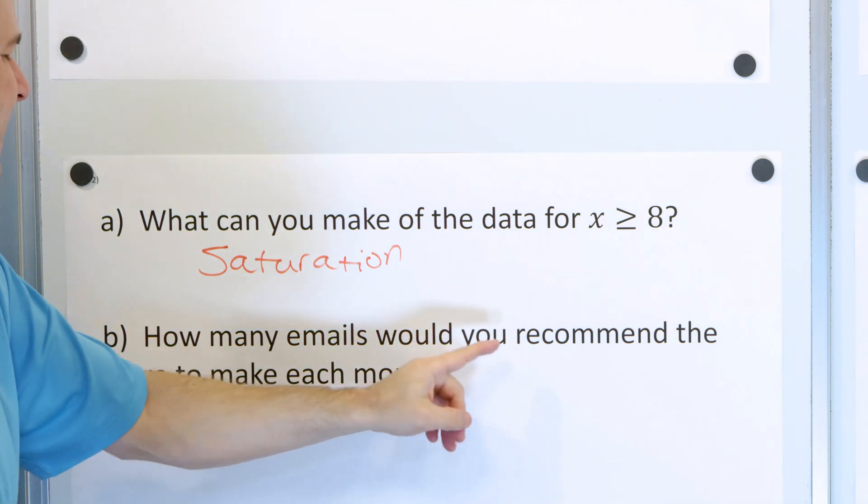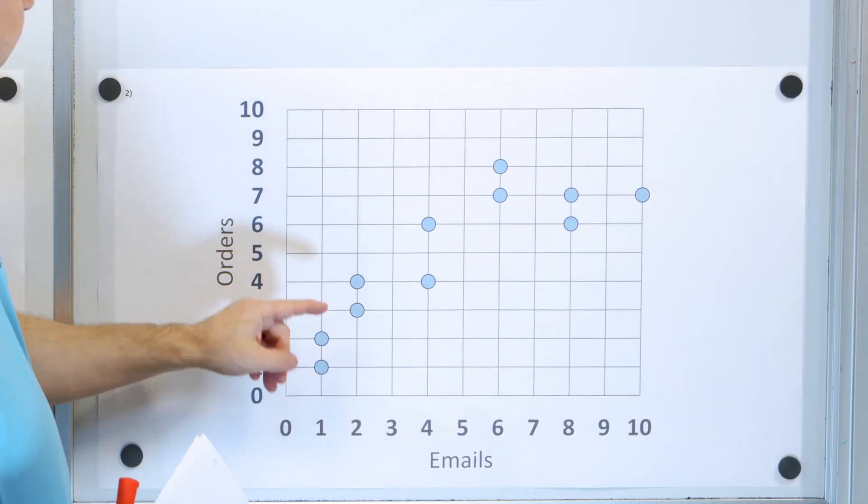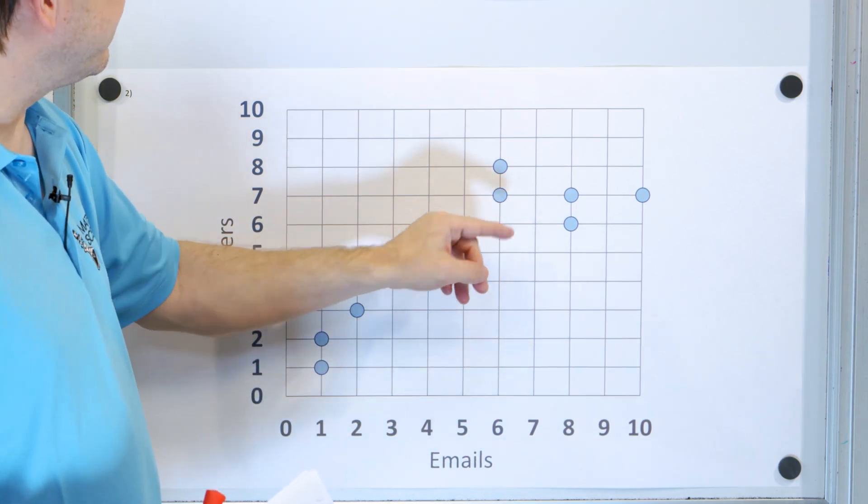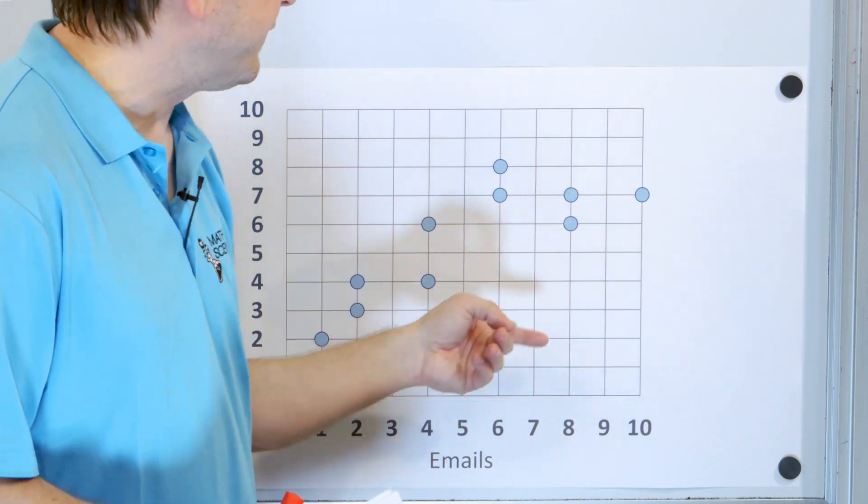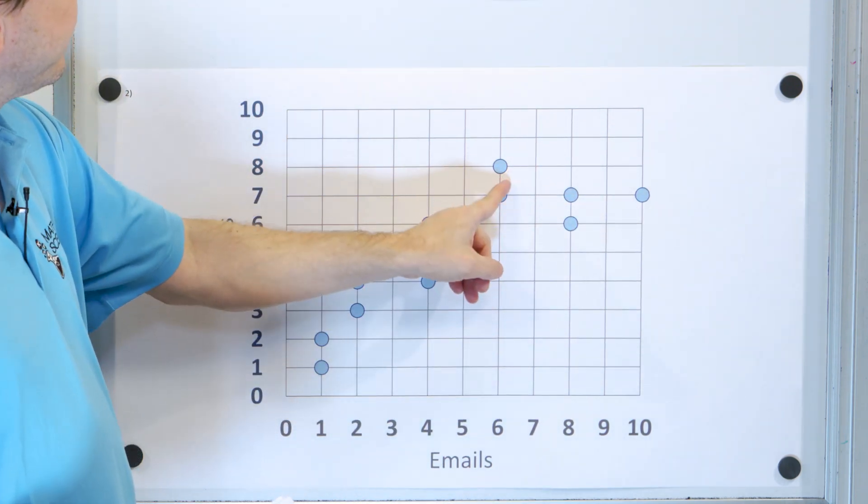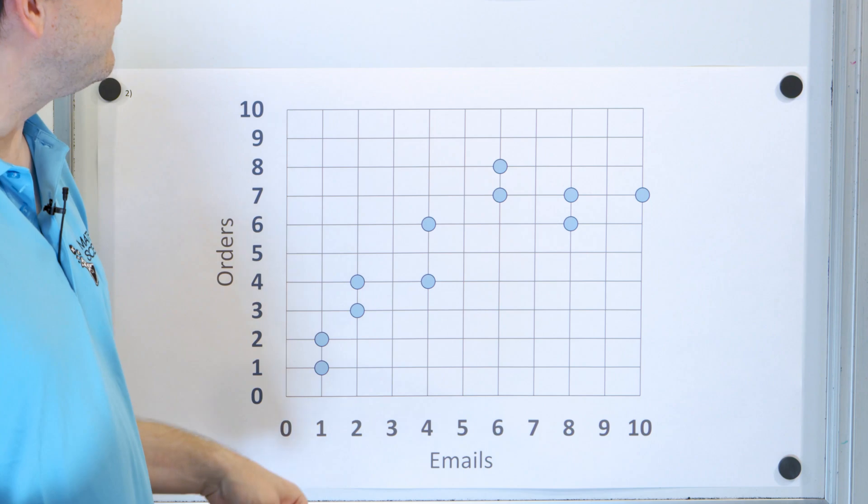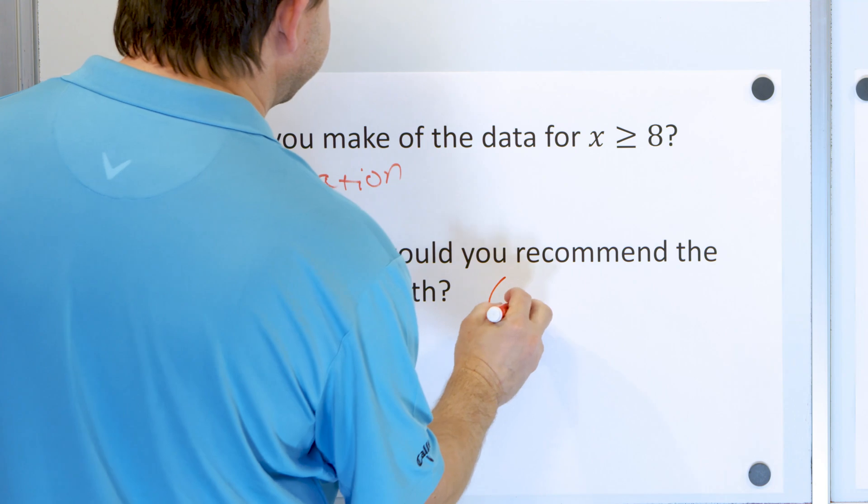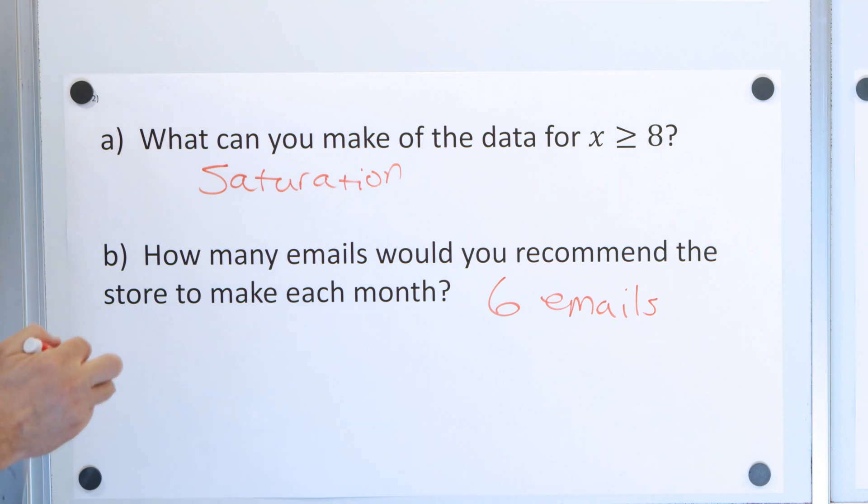Part B, how many emails would you recommend the store to make each month? Well, if I send one email, I'm going to do this many orders. If I send two emails, I'm going to do this many. Four emails, I'm going to do this many. Six emails, I'm going to do this many. But as I go up higher, I don't really get much more bang for the buck. So if it were me, I would actually recommend six emails a month. If you want to be nice, maybe four emails a month. But probably somewhere around six emails a month is the best bang for the buck, because beyond that you're just going to make people mad. So six emails per month. Let's take this one down and do our last problem.